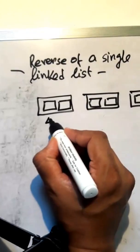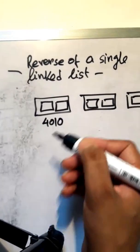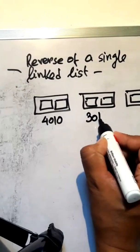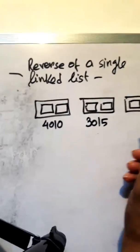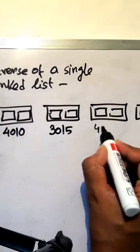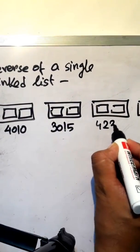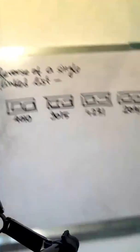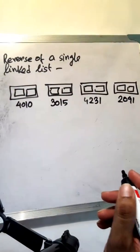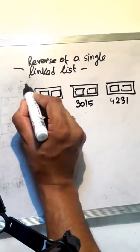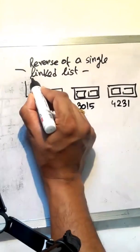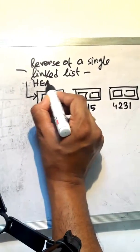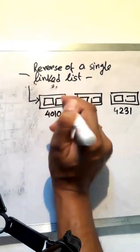Suppose the address of the first node is 4010, the next node address is 3015, then 4029, and 2091. So we have these addresses. The bottom node — the head — is the starting node. We have the head pointer.